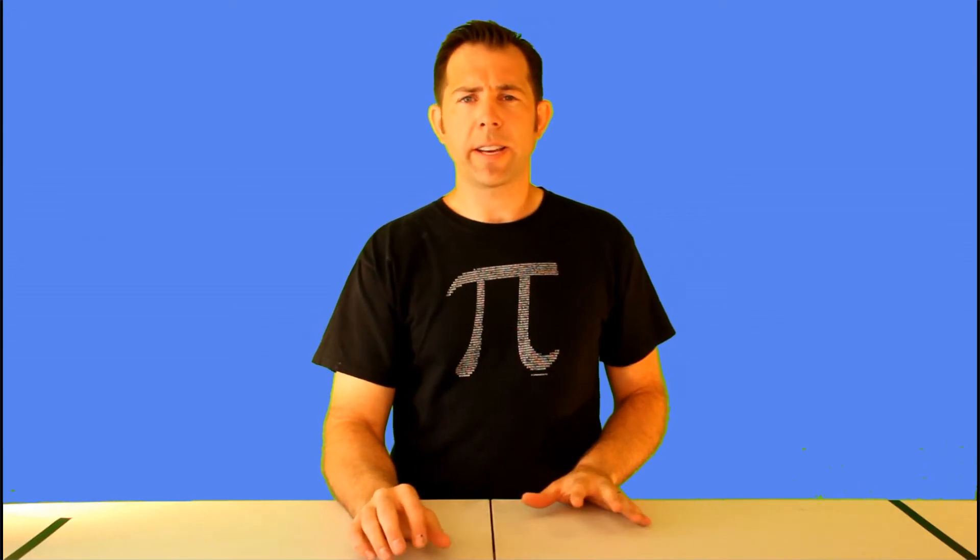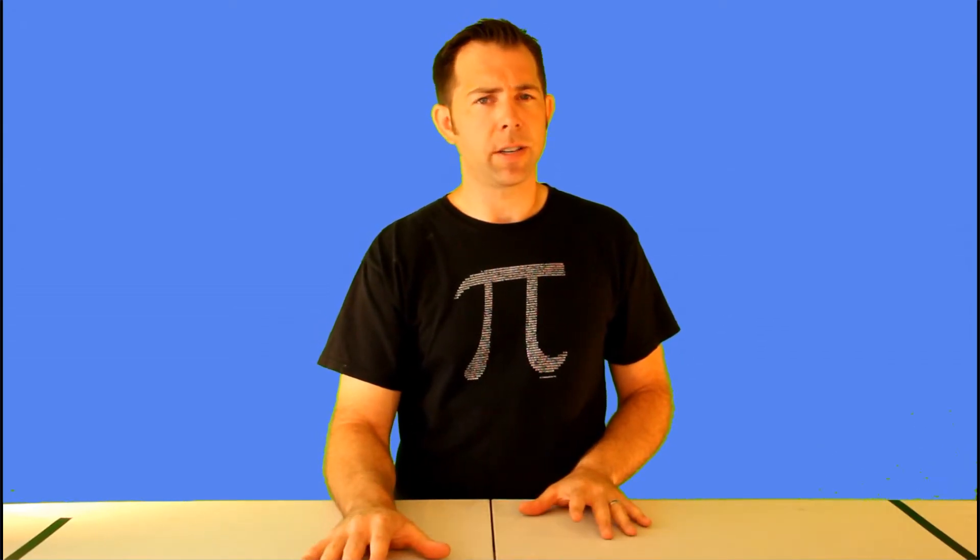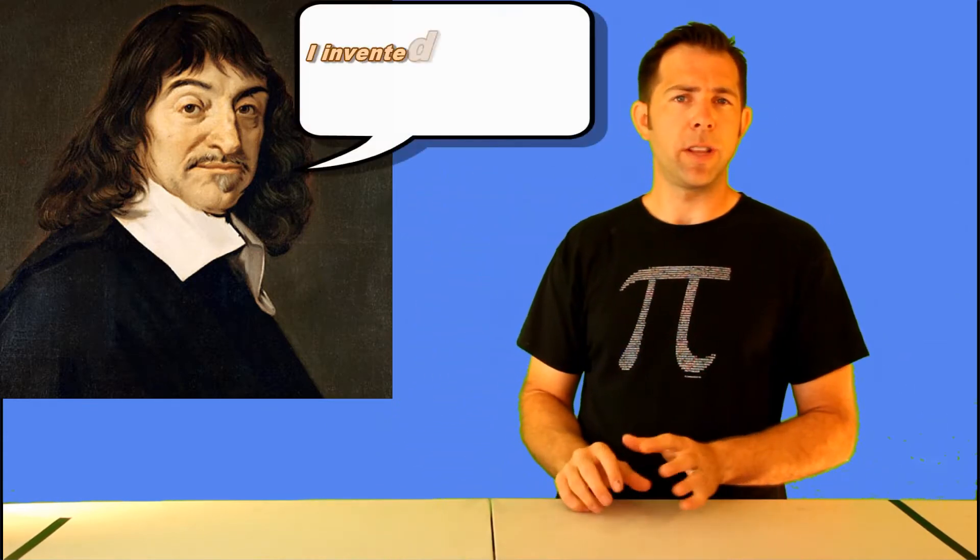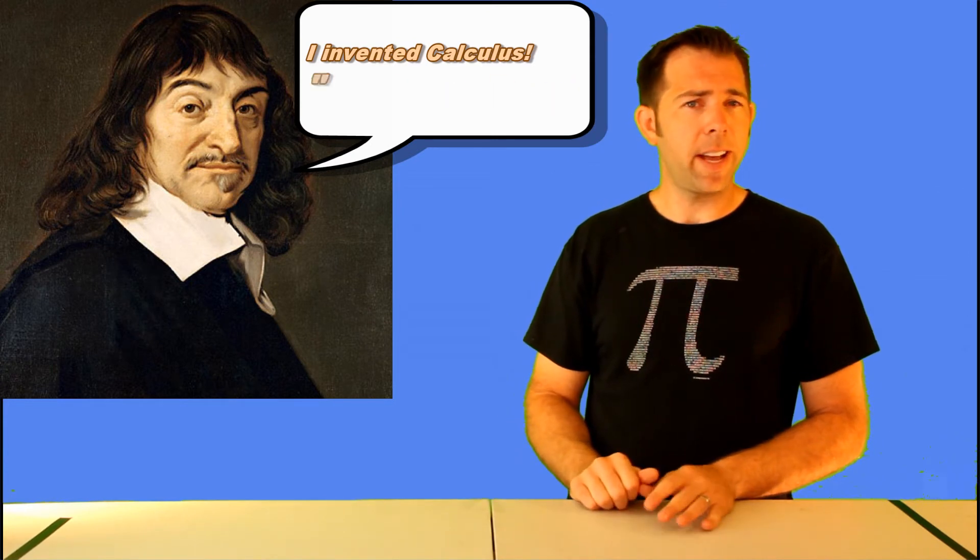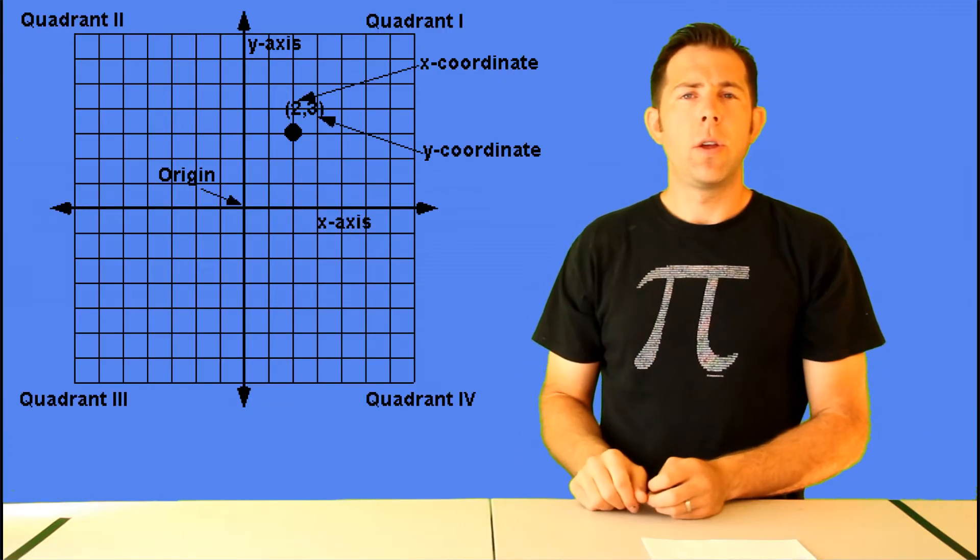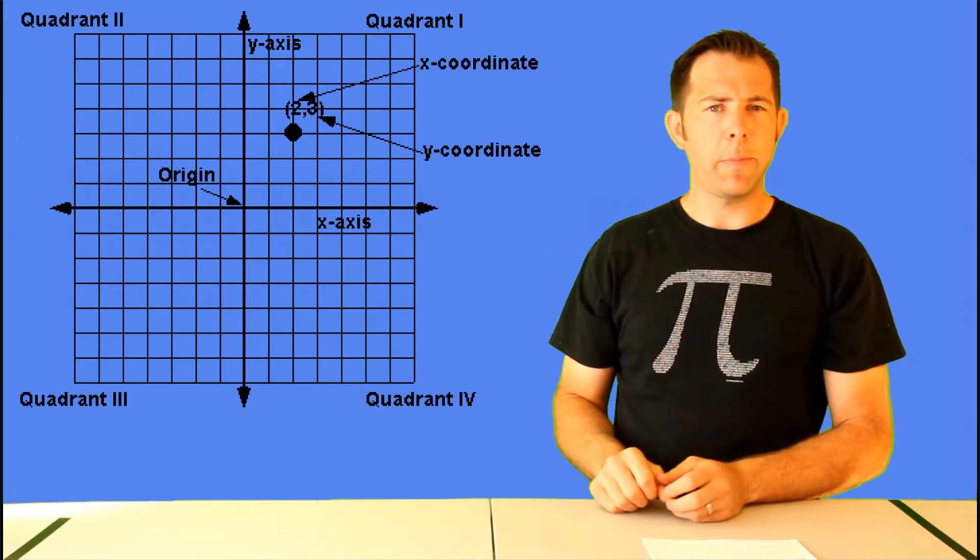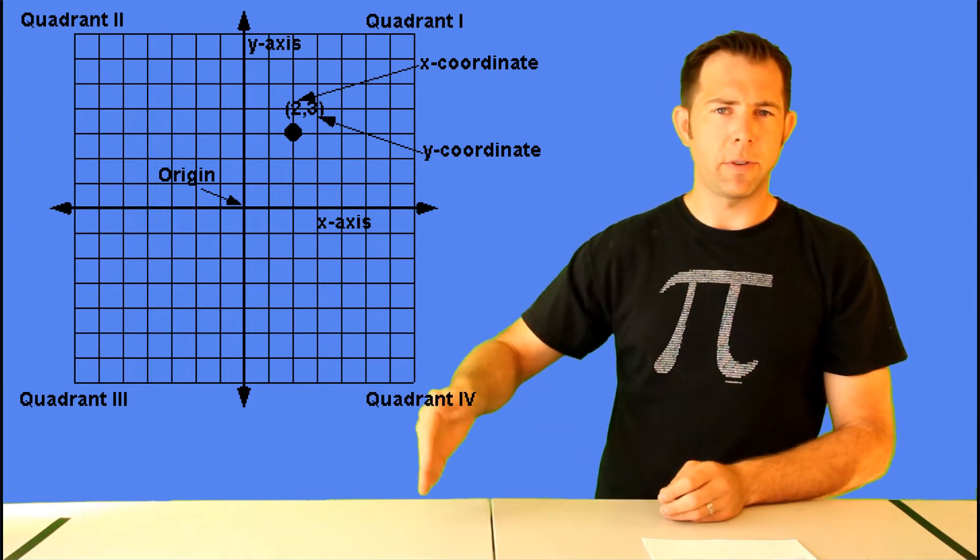Next we're going to take a look at the rectangular coordinate plane, sometimes called the Cartesian coordinate plane, named after this guy, Rene Descartes. He's one of these old French mathematicians that you get to know pretty well because he's one of the guys that invented calculus.